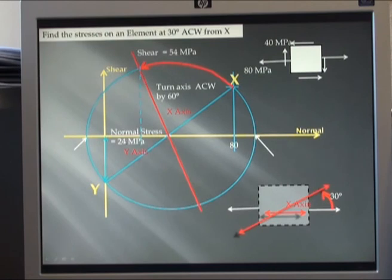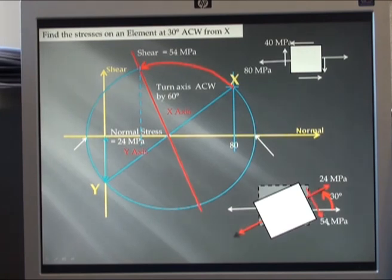This point has a normal stress of 24 and a shear of 54. My normal of 24 can go here. Construct my element. Put my shear on that of positive 54, going clockwise.